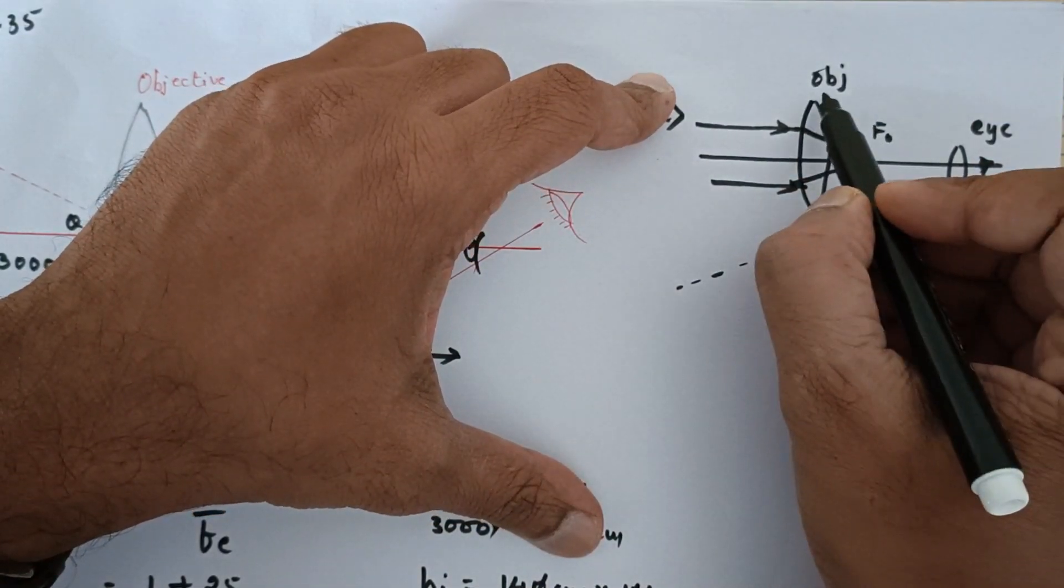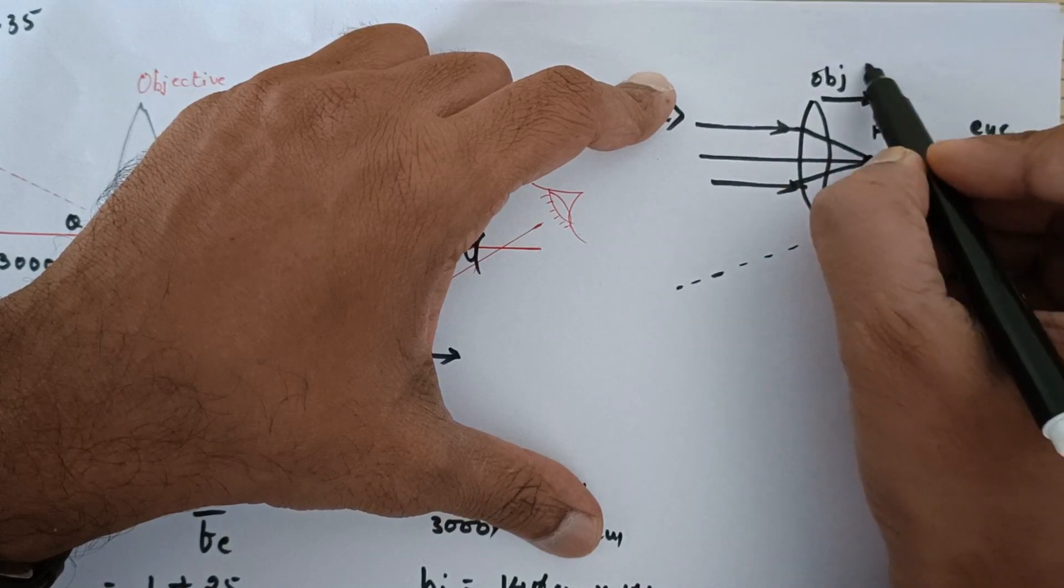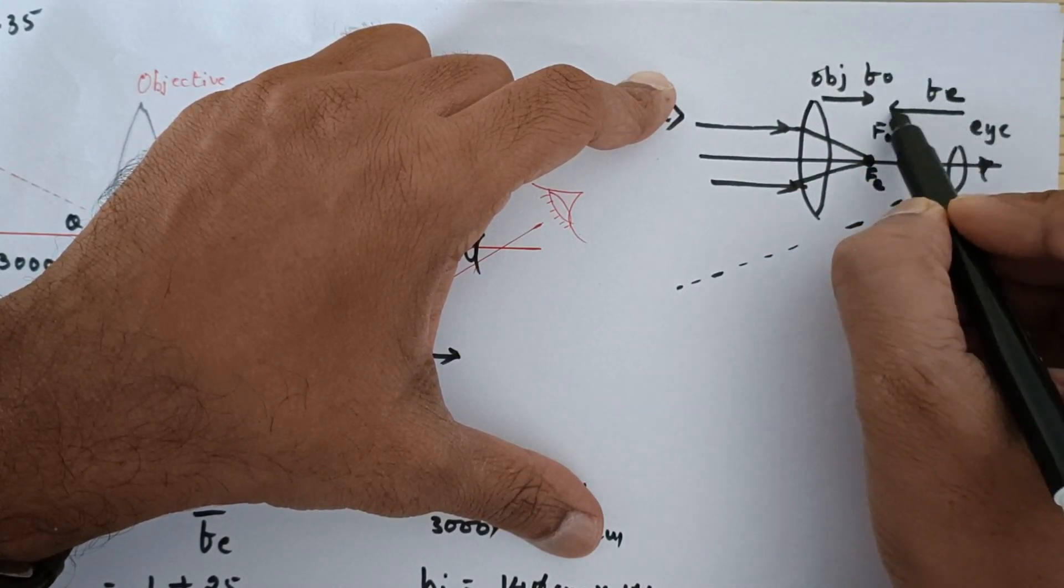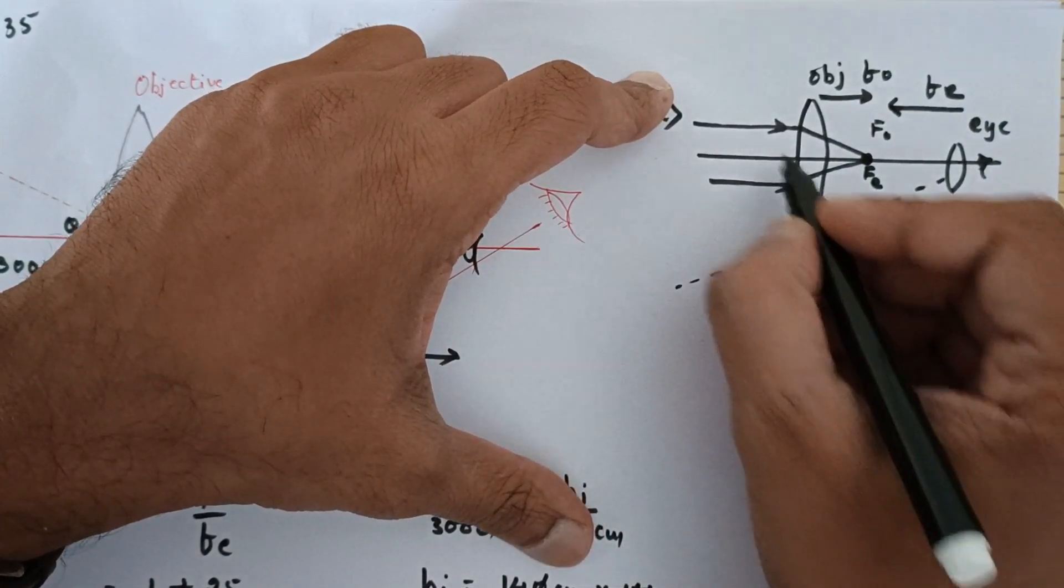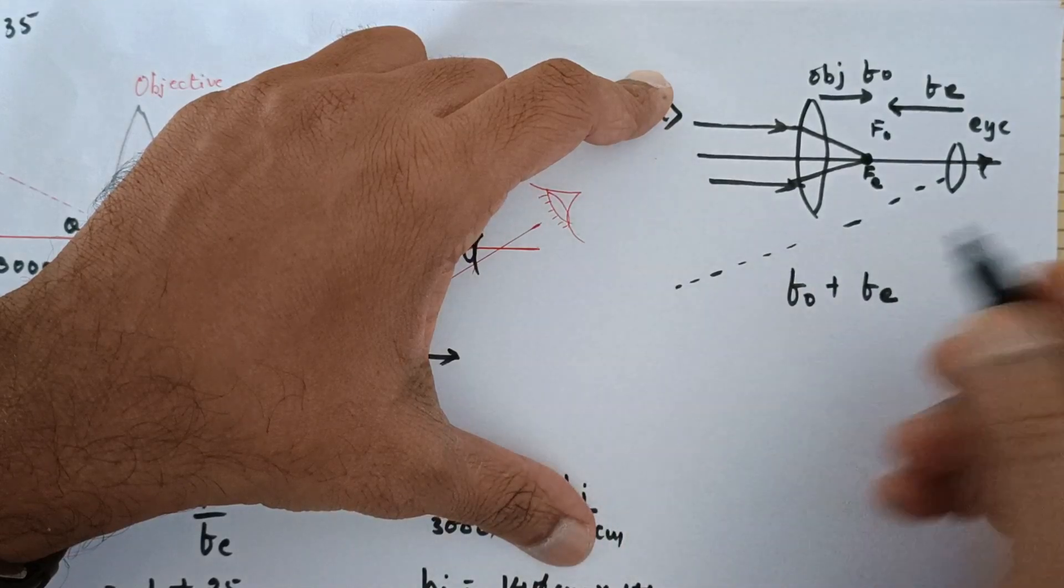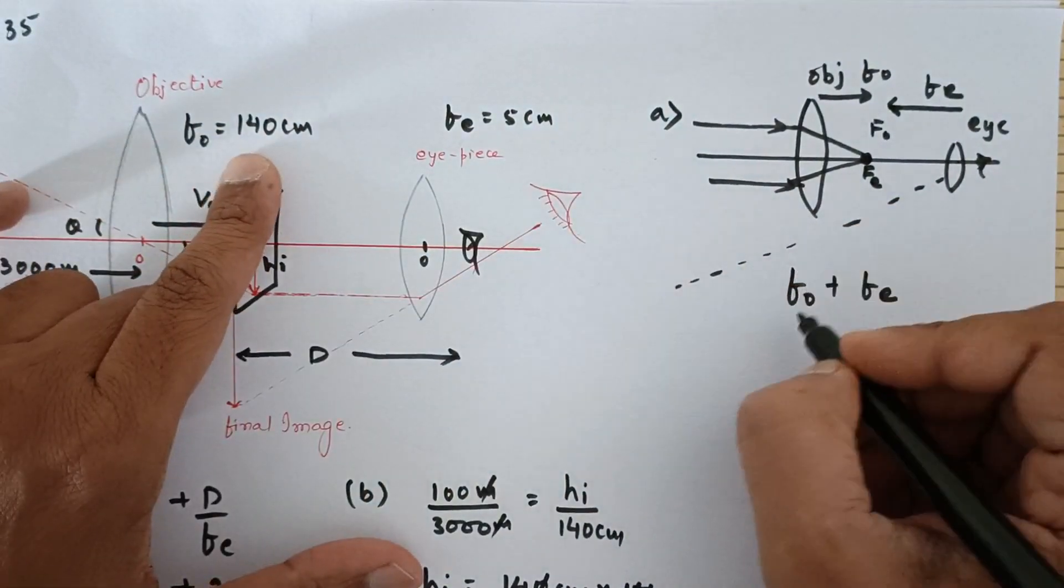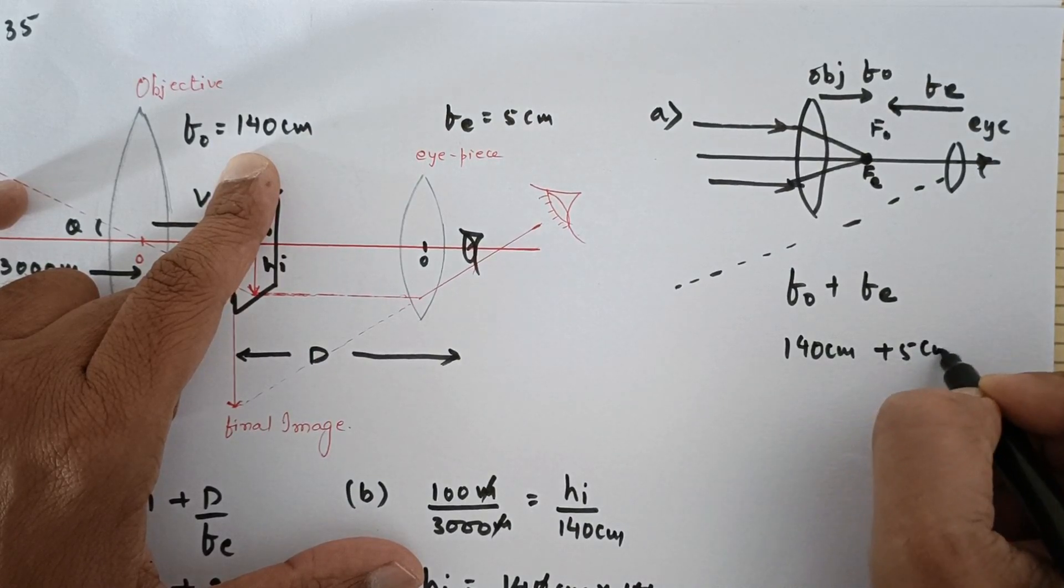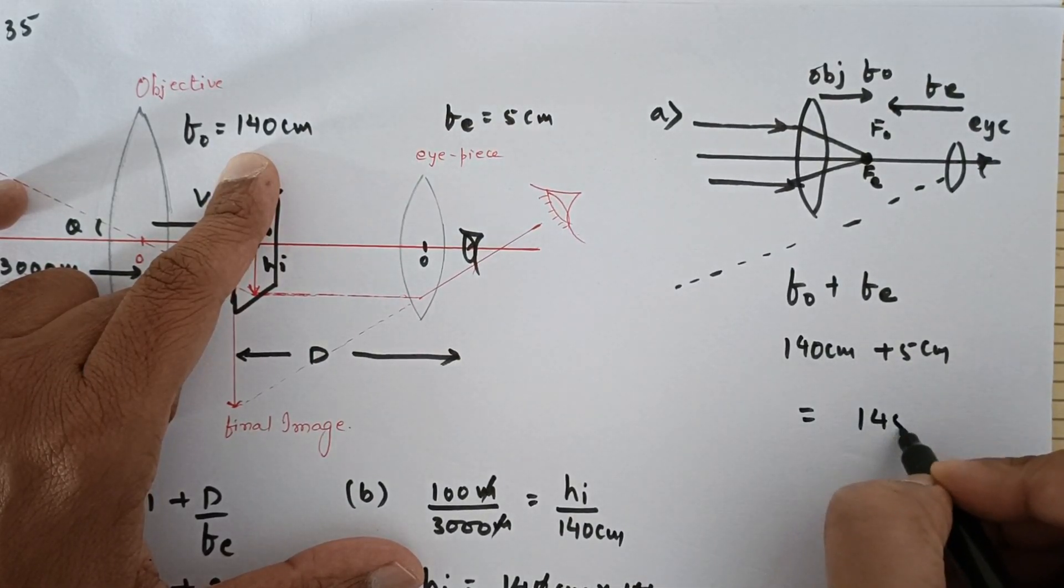Under this situation, the distance between two lenses would be Fₒ and this distance is Fₑ. So the distance between both lenses will be Fₒ plus Fₑ, and that is 140 centimeters plus 5 centimeters. So our answer would be 145 centimeters.